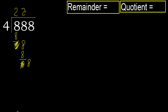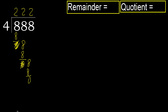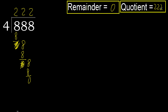Next, 8. 4 multiplied by 2 is 8, which is not greater. Subtract. Next, there is no number, therefore finish it. Therefore 888 divided by 4 is 222. There is no remainder. Thank you.